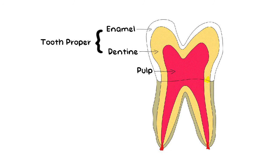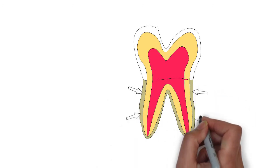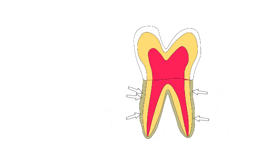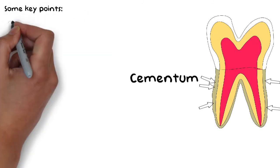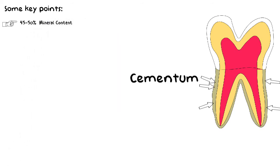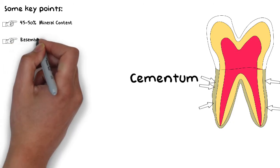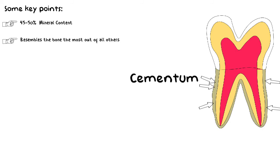Talking about the root — the dentine and pulp are the same as in the crown, but there is an important difference in the outermost layer. In the root, the outermost layer, which is enamel in the crown, is replaced by a mineralized tissue known as cementum. The tooth is three-layered throughout, whether the crown or the root. The cementum contains approximately 45 to 50% mineral content, so it is not as hard as enamel or dentine, which makes sense as it doesn't face the masticatory loads that enamel does.